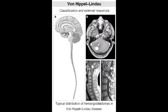What mutation can lead to Von Hippel-Lindau disease? Von Hippel-Lindau disease occurs due to a mutated tumor suppressor VHL gene on chromosome 3.